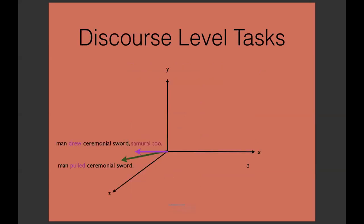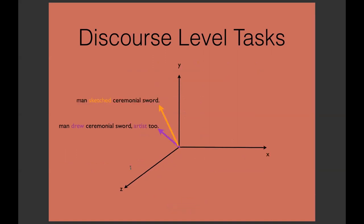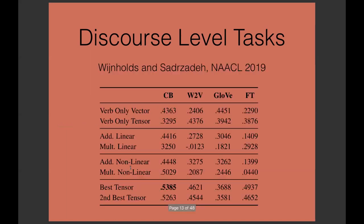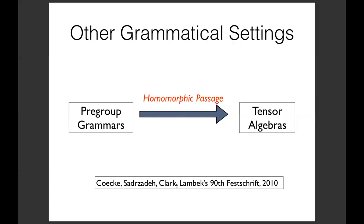Recently we've extended these models from sentence level to discourse level. When you have, like, 'man drew ceremonial sword, samurai too,' you add a VP elliptical trace to your sentence, and then obviously it becomes closer to 'man pulled ceremonial sword.' You can verify this using vectors. If it was 'man drew ceremonial sword, artist too,' then obviously it would mean 'man sketched ceremonial sword.' We've developed the dataset with Krist Rainholds. As you can see in this table in boldface, again one of the tensor-based models provides best results. This was published in NAACL last year.